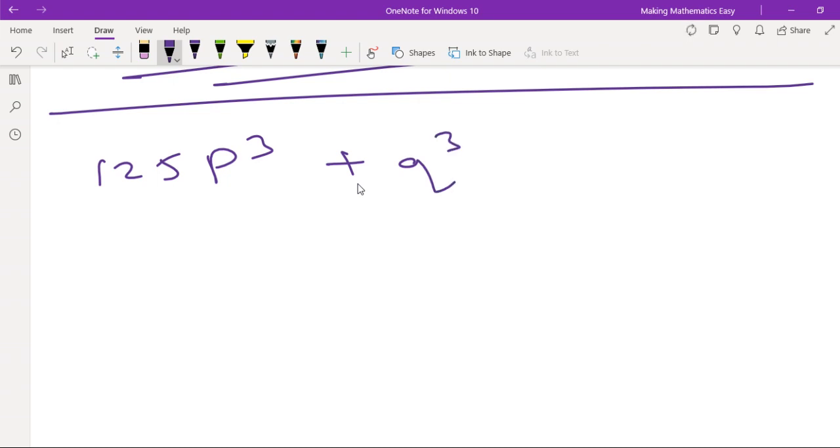So in our previous video lecture, we have learned how to convert this in the whole cube form. So you need to find out cube root of 125,